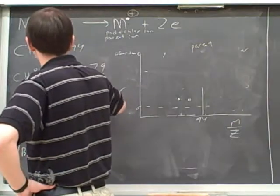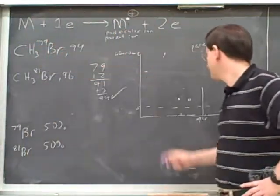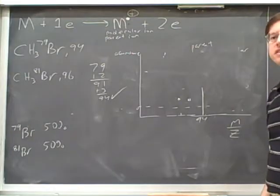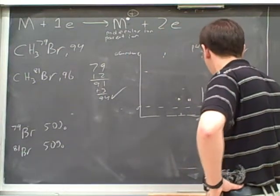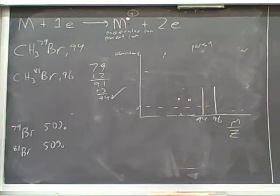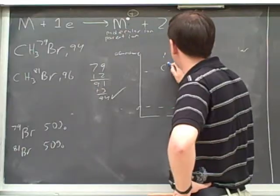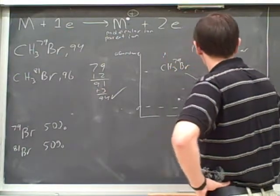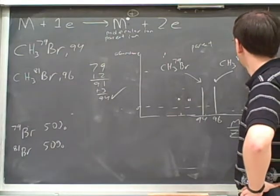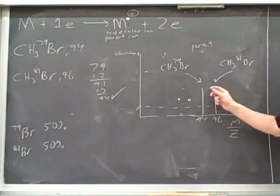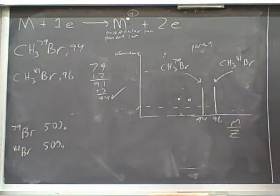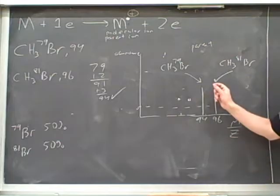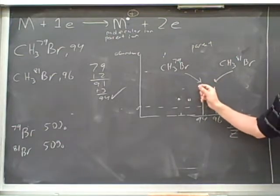But this one would be at 96. Now, what's going to be the relationship between their vertical heights? They're going to have the same height because these are in the same abundance. Remember, the vertical height represents the abundance. This will be the peak that represents the methane with the bromine 81, and this will be the peak that represents the methane with the bromine 79. And they should be at about equal heights. So if this is a height of 12%, this would be a height of 12%. Or if this is a height of 33%, this would be a height of 33%.